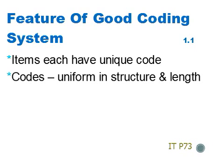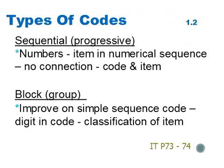The features of a good coding system are: each item has a unique code, and the codes are uniform in structure and length. Here are some examples of different types of codes. Sequential or Progressive: numbers are given to items in numerical sequence, and there is no connection between the code and the item. Block or Group: this is an improvement on the simple sequence code, since a digit in the code indicates the classification of the item.